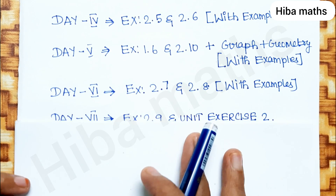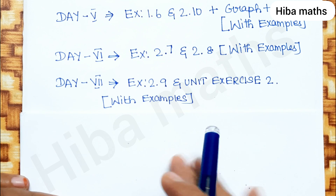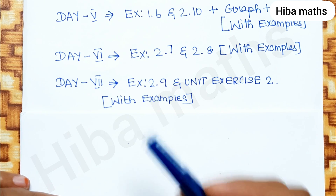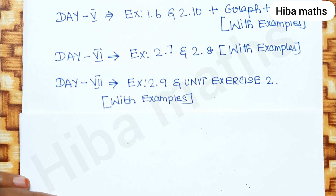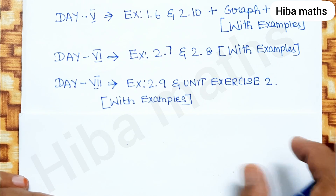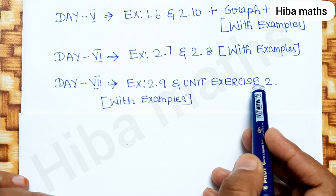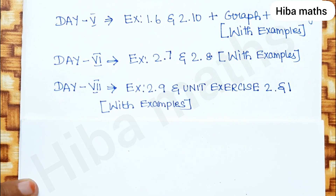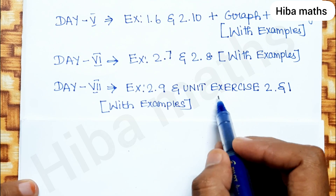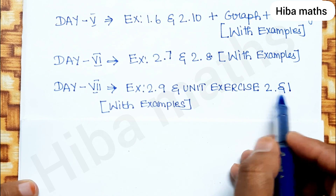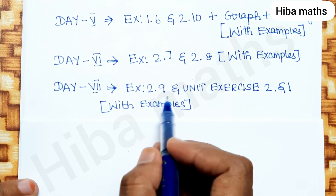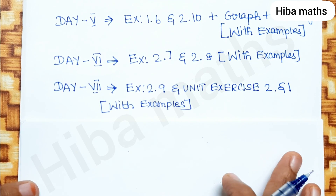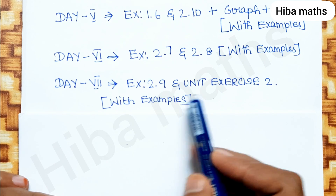Day 7: exercise 2.9 and the unit exercise. Exercise 2.9 covers special series — the sum of natural numbers, sum of even numbers, sum of odd numbers, and cubes. That includes sum of even and sum of odd. The unit exercise covers parts 2 and 1. Exercise 2.9 is formula-based and small. The first chapter is solved, and the second chapter's unit exercise is completed.